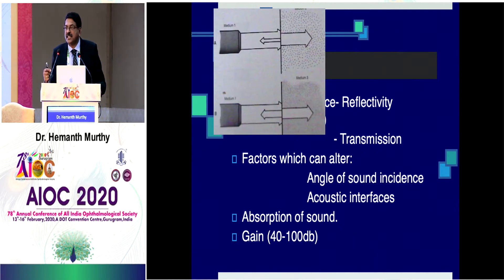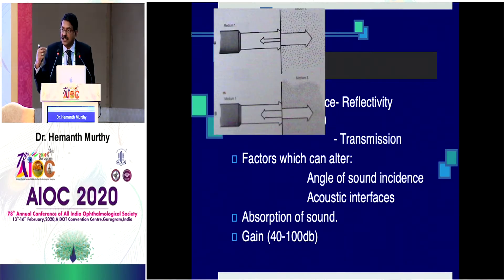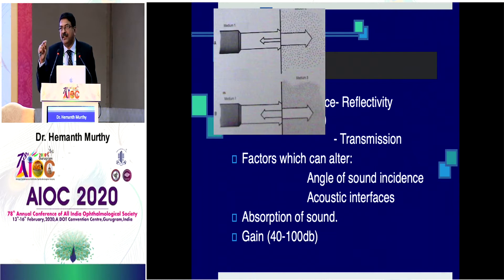When sound passes through a rarer medium to a denser medium, there is reflectivity. If you pass it through a still denser medium, you have a greater amount of reflectivity, so you see a brighter signal, and a lesser amount of sound waves pass through.